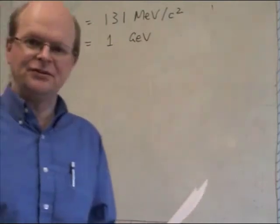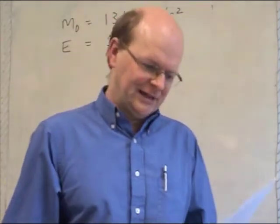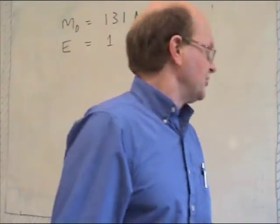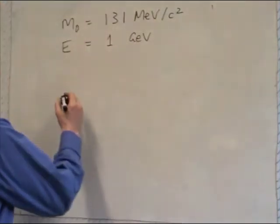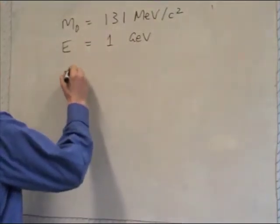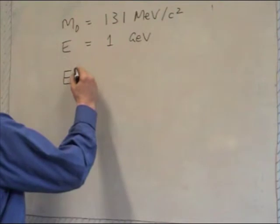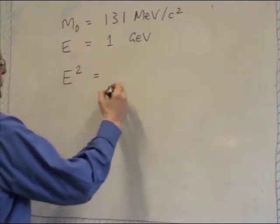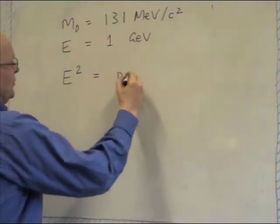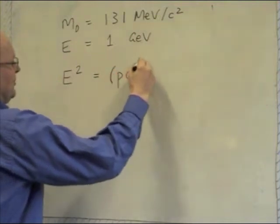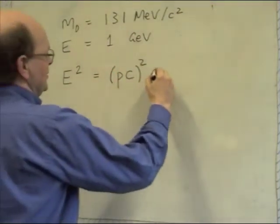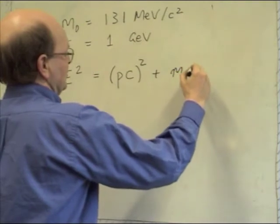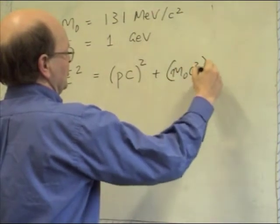And the first question is, what's its momentum, and express the momentum in MeV over C. So for that we use this formula, the energy-momentum-mass relation. So if you have a particle with total energy E, the square of that energy is equal to the sum of the squares of its momentum, the magnitude of its momentum times C all squared plus M nought C squared all squared.